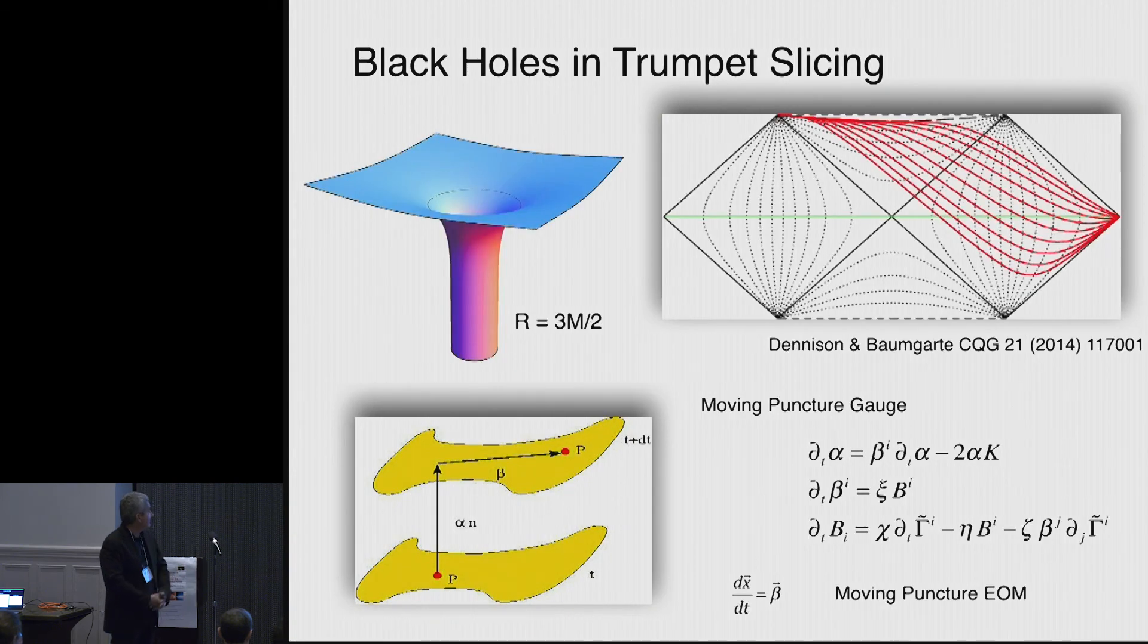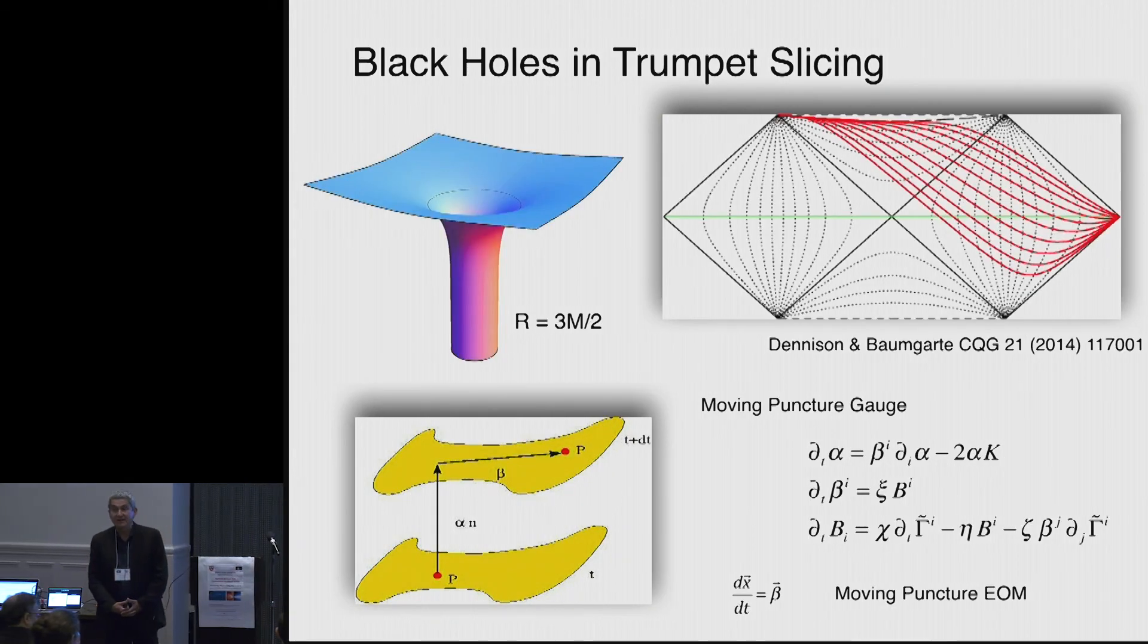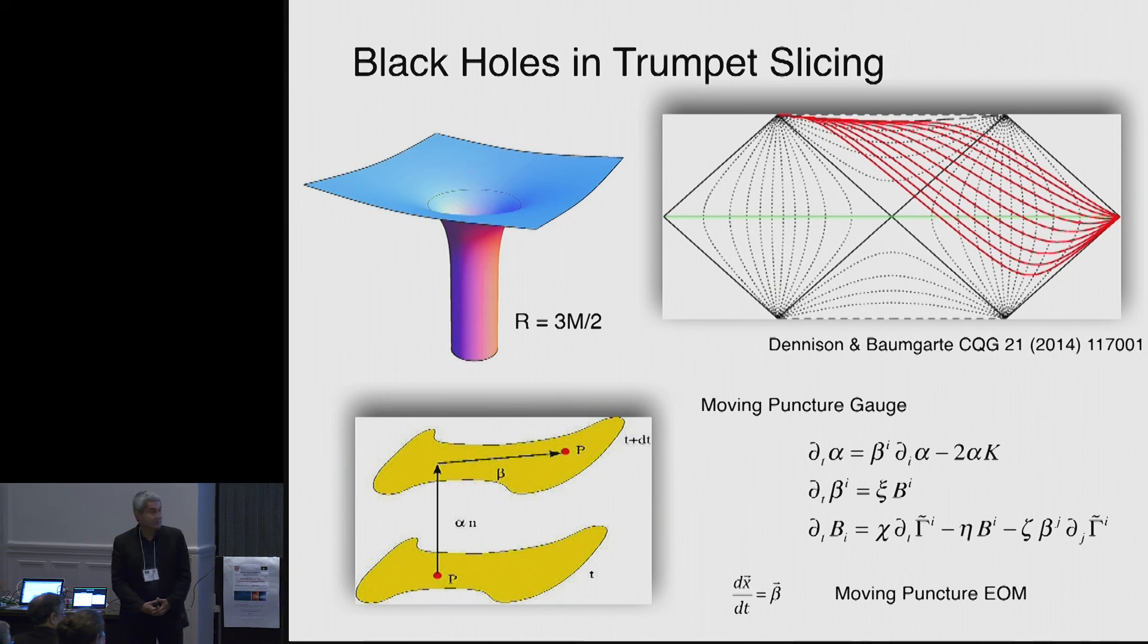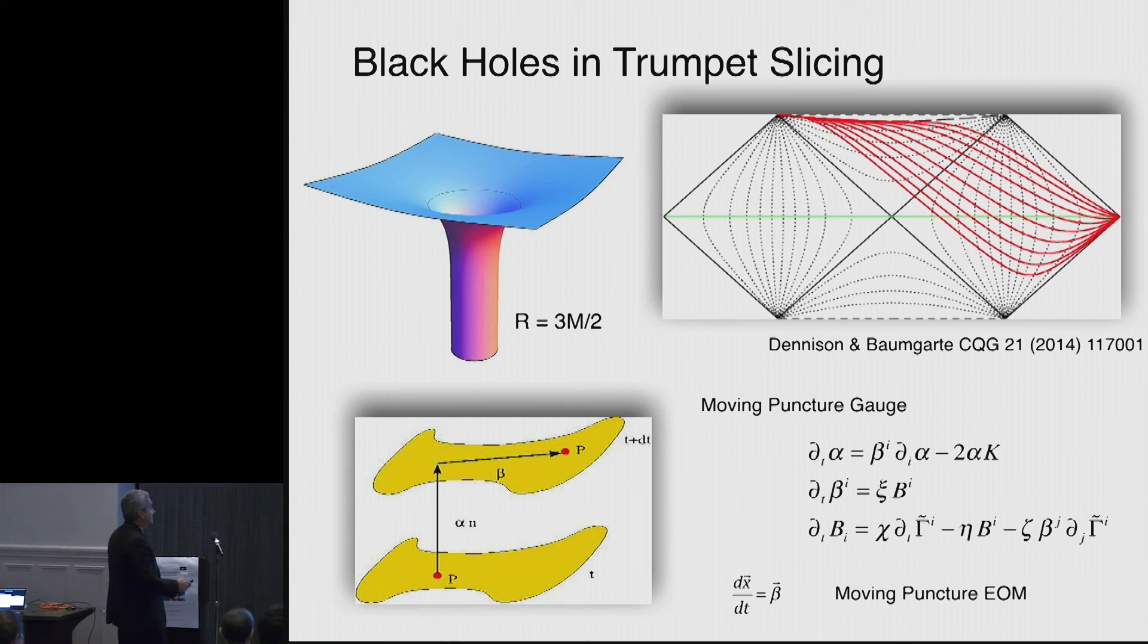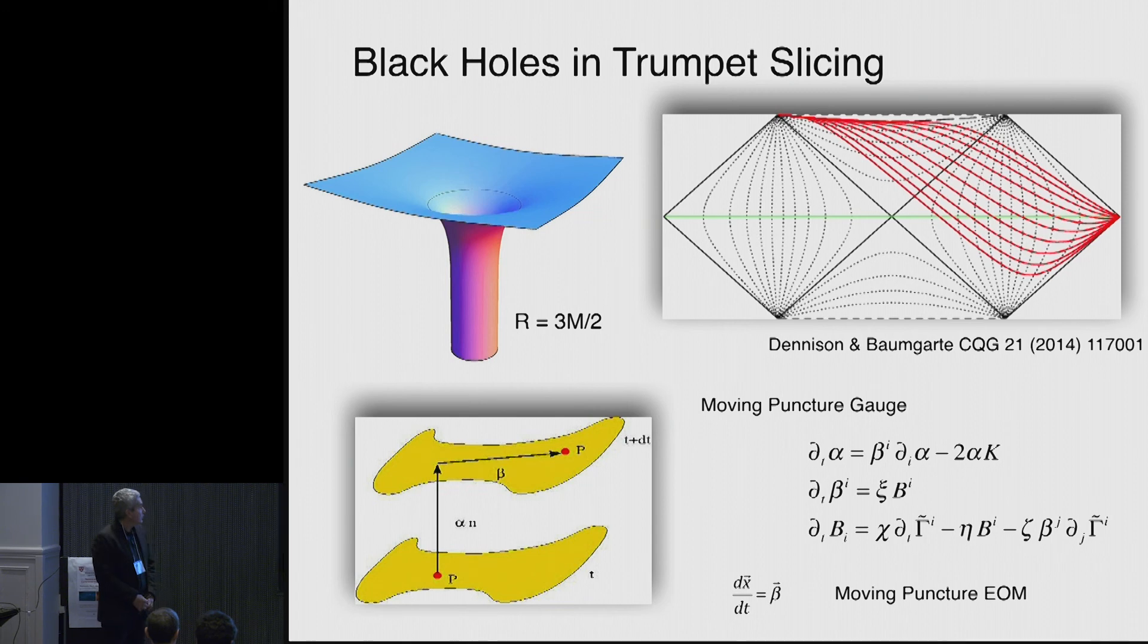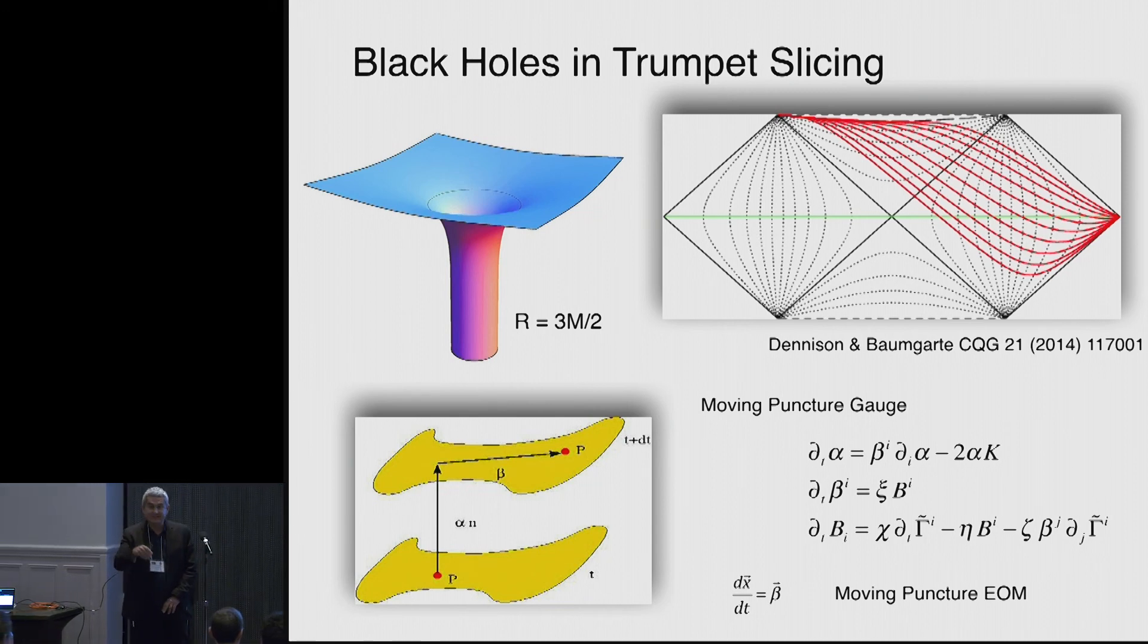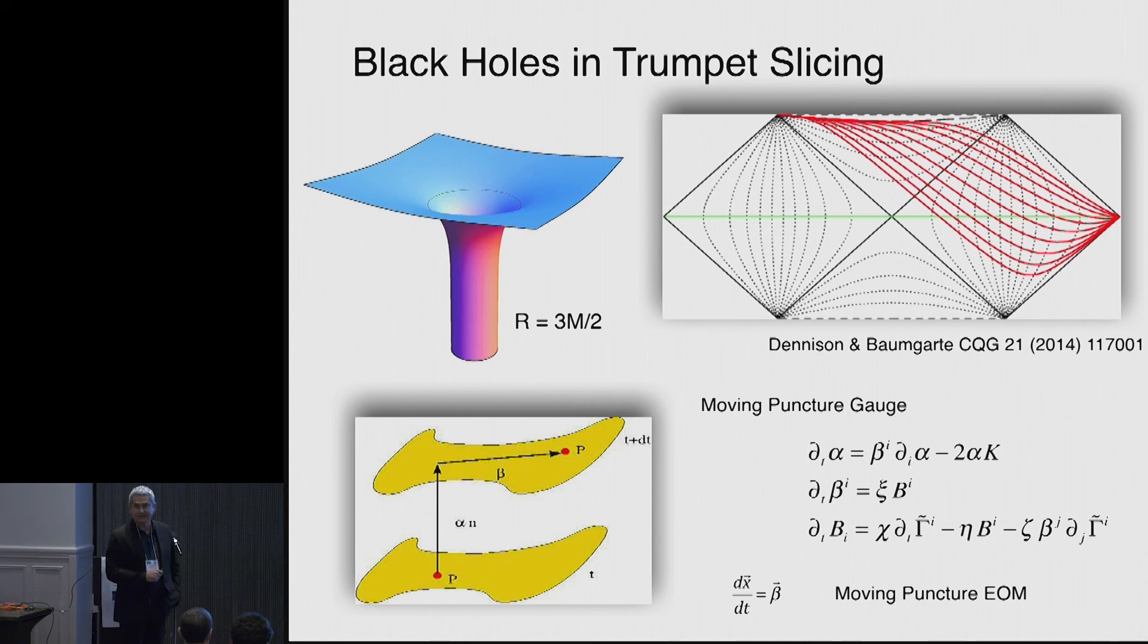So the approach that has worked is one in which you do the following. So here is again the same diagram. But instead, you pick slices in time that are given by these red lines there. So you have going to spatial infinity. You cross the horizon, but you avoid hitting the singularity by basically piling up the slices at basically a radius of three-half of m. So all the surfaces there.